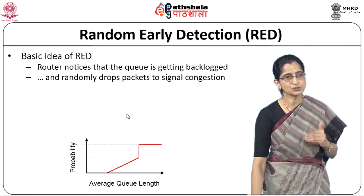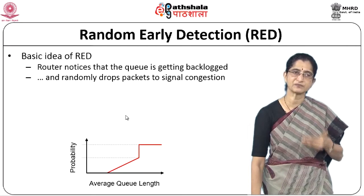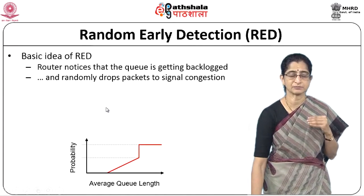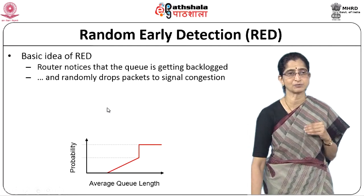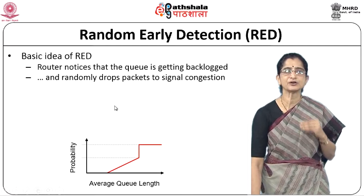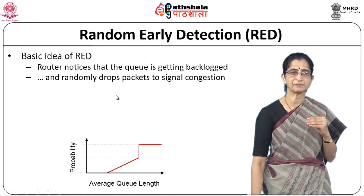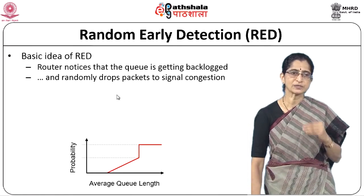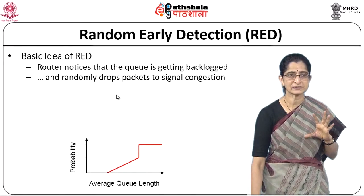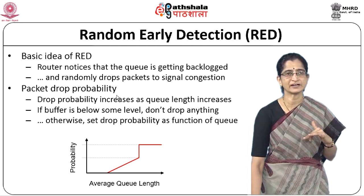RED is a mechanism used along with routers in order to inform TCP that the buffers in the routers are becoming full. How does the router inform the host running TCP? There is no direct mechanism. What the router does when running RED is that it randomly drops packets. Remember that a dropped packet is a signal of congestion for TCP. The moment the router notices that the queue is getting backlogged and getting fuller, it just randomly drops packets, which becomes an indication of congestion to TCP. TCP will then start reducing the amount of data it is sending.